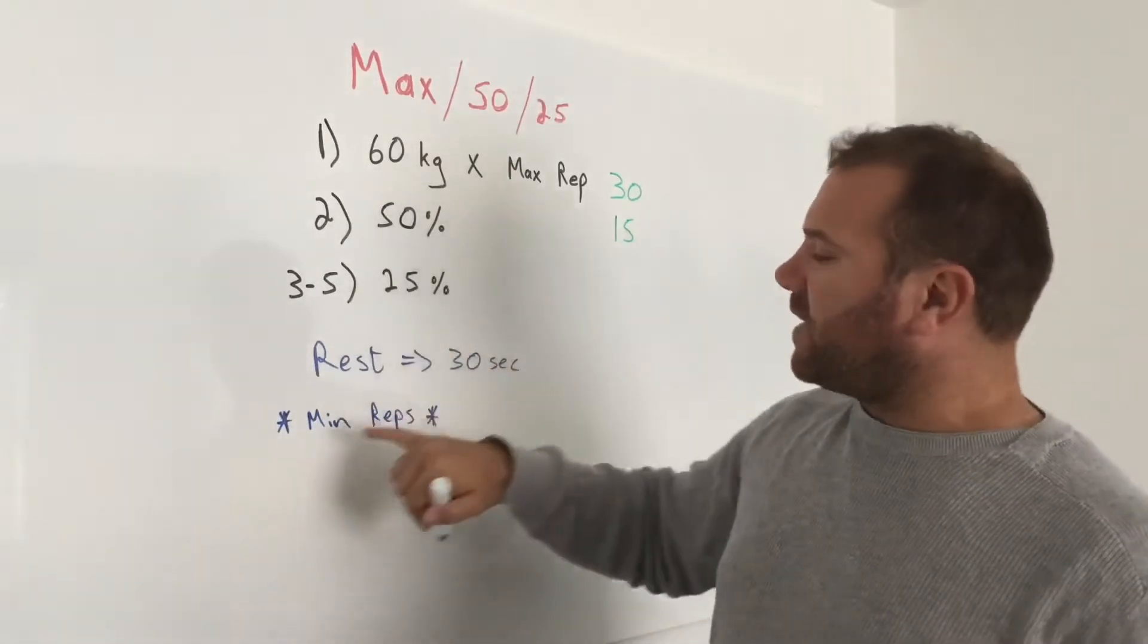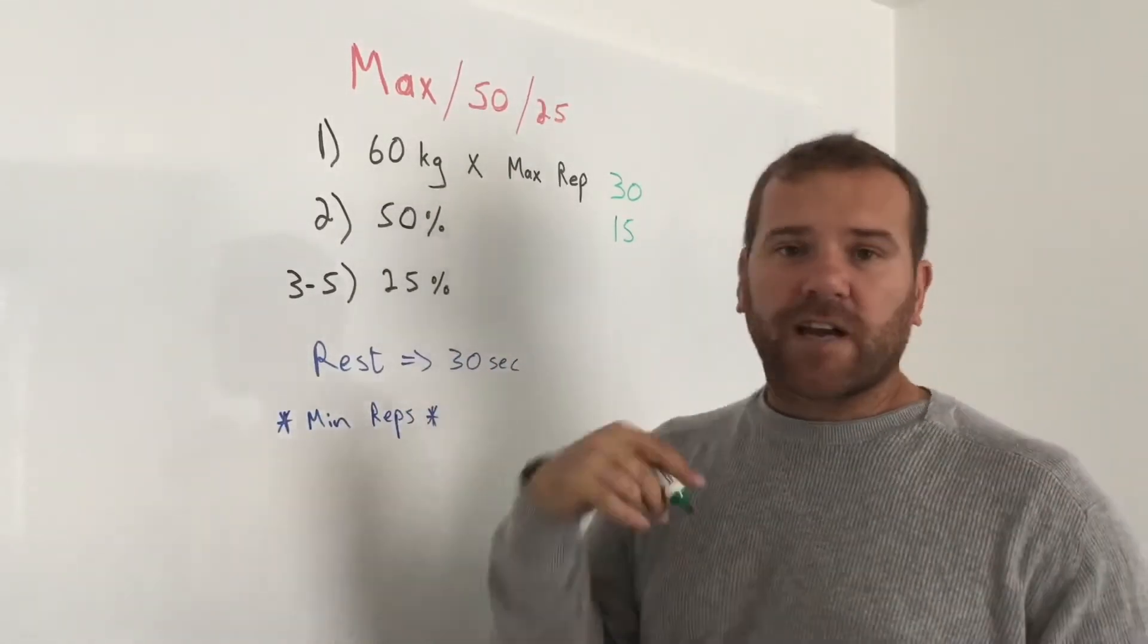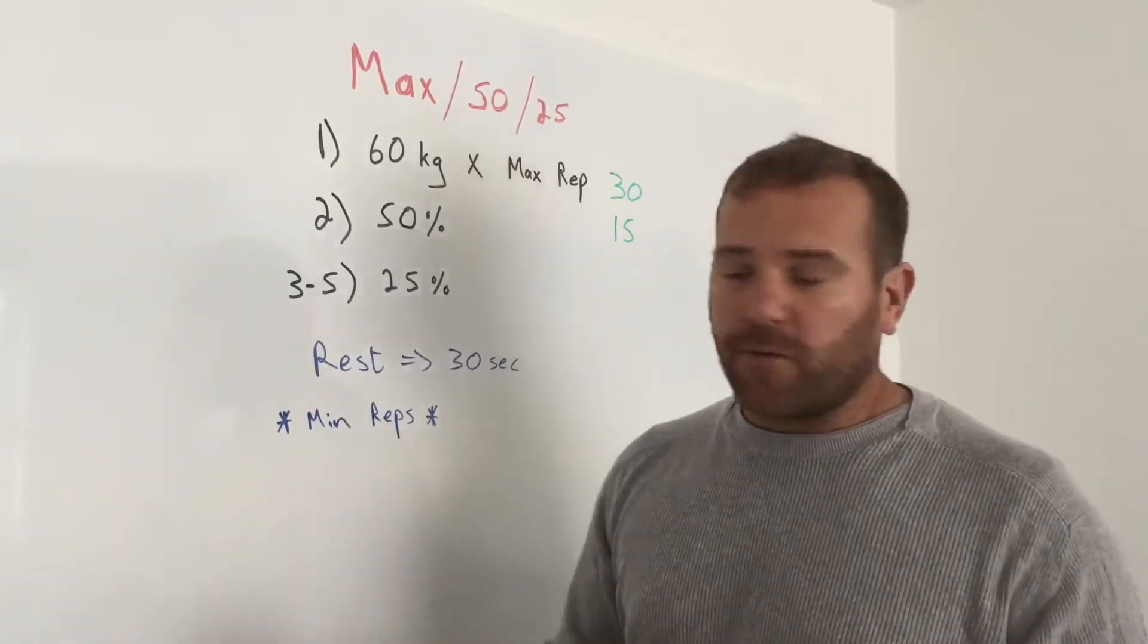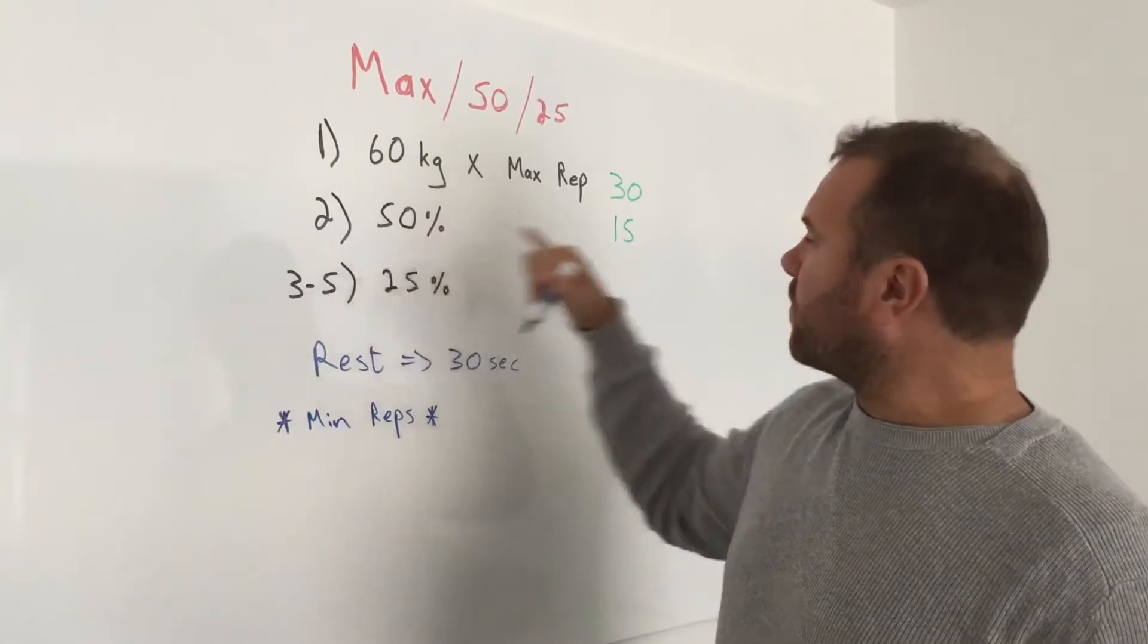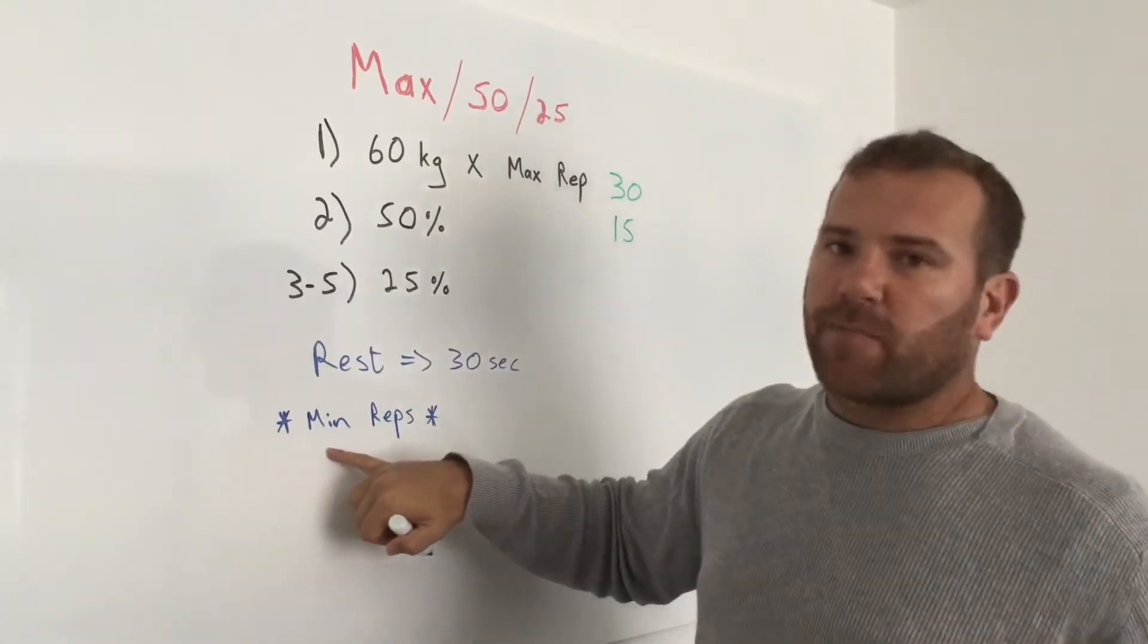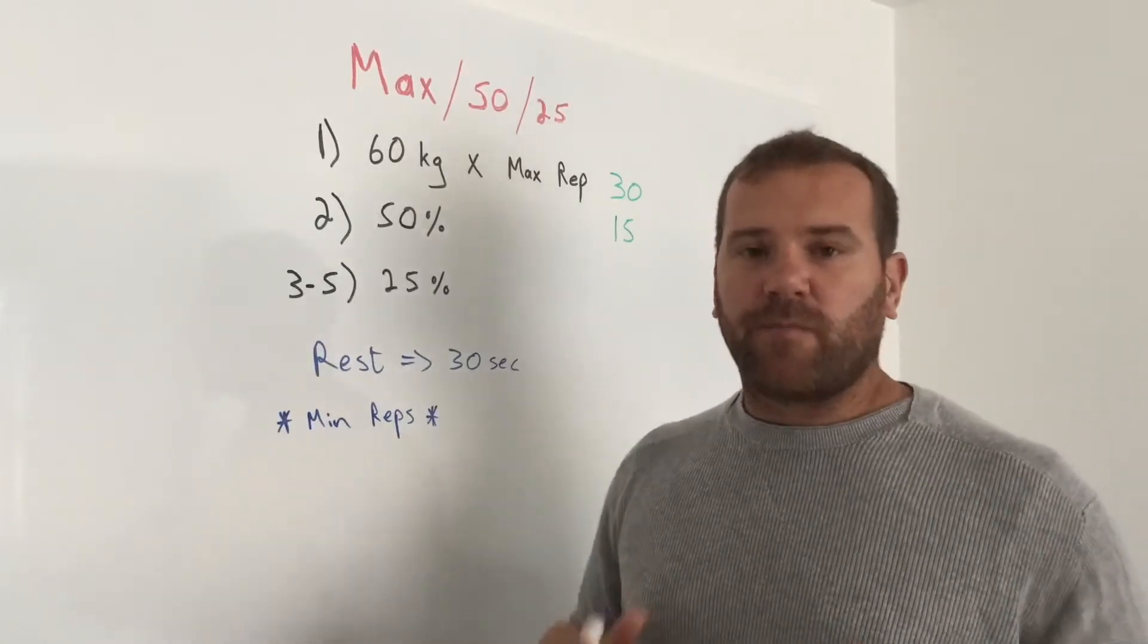If I reach 15 but I feel I've still got a few more reps in me, I'm going to pump out a few more. So that 50%, which in this case is 15 repetitions, is your minimum amount of reps. If you reach 15 it doesn't mean stop, it means try and do a few more.